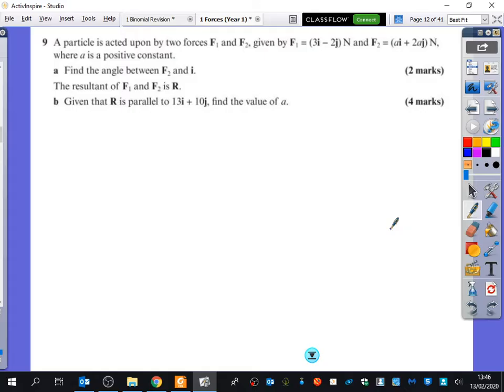I want to show you this again to make sure that we really understand what's happening. So it's got a particle that's being acted on by two forces, and the forces, I prefer them in column notation, are 3, minus 2, and the second force is A, 2A.